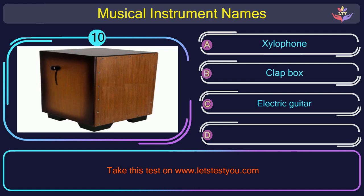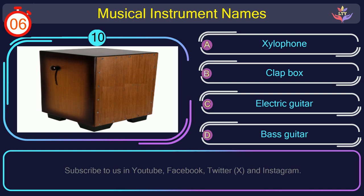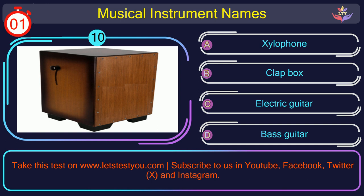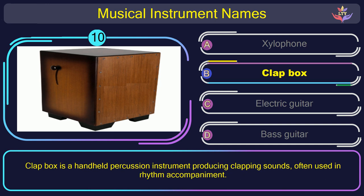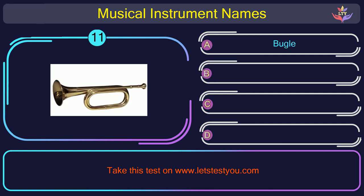Question number 10. Could you figure out the name of the musical instrument in this picture? The correct answer is option B: Clap box. Clap box is a handheld percussion instrument producing clapping sounds, often used in rhythm accompaniment.